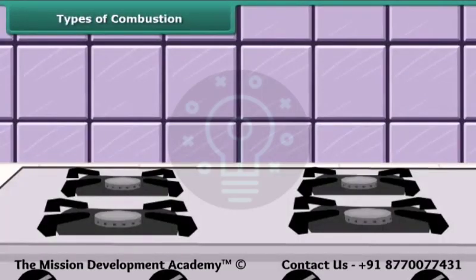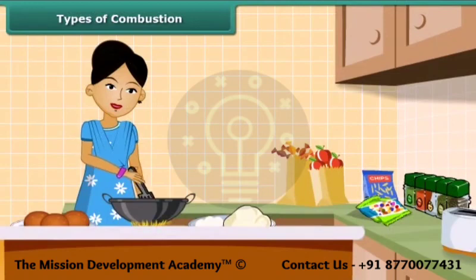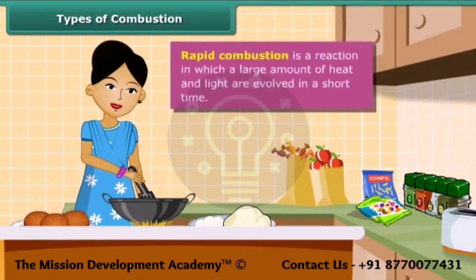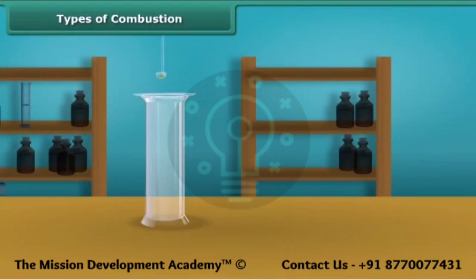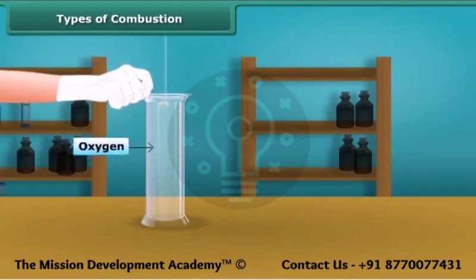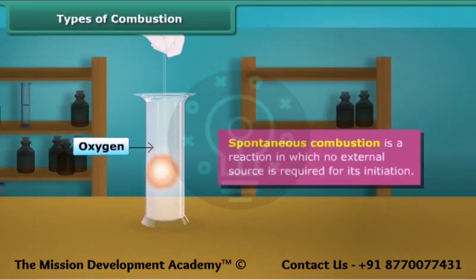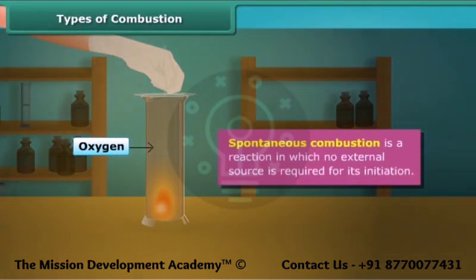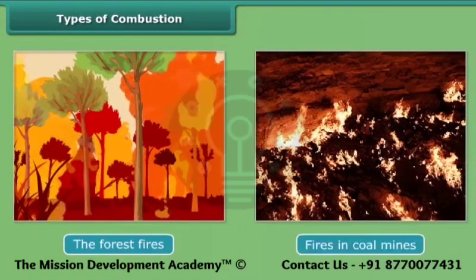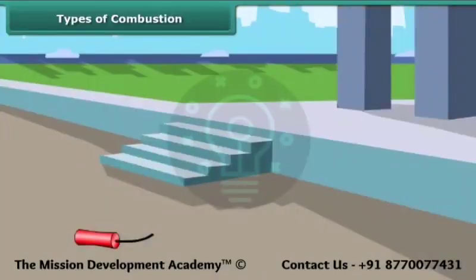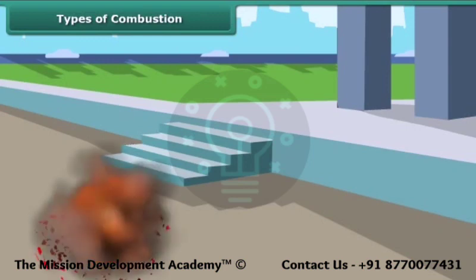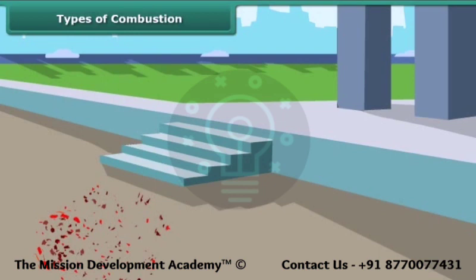Let us now look at types of combustion. You can see a lady igniting LPG in a kitchen to make food. LPG burns quickly producing a lot of heat — this type of combustion is called rapid combustion. When white phosphorus is left in the open for some time, it catches fire. This type of combustion is called spontaneous combustion. Other examples of spontaneous combustion are forest fires and fires in coal mines. The burning of a cracker produces a large amount of heat, light and sound — this type of combustion is called explosion.